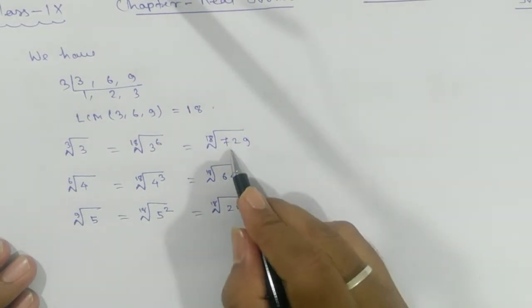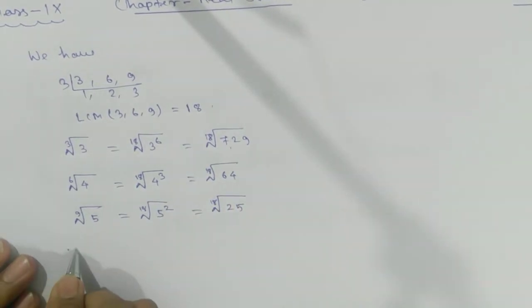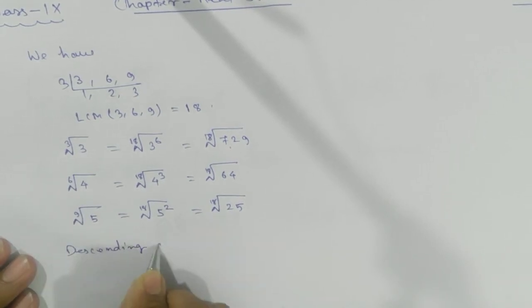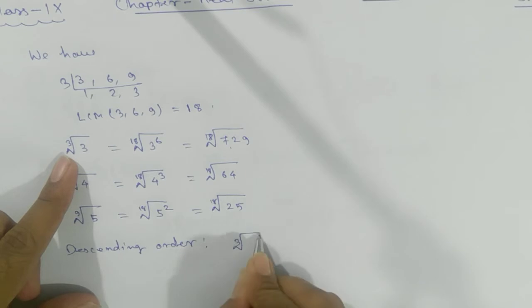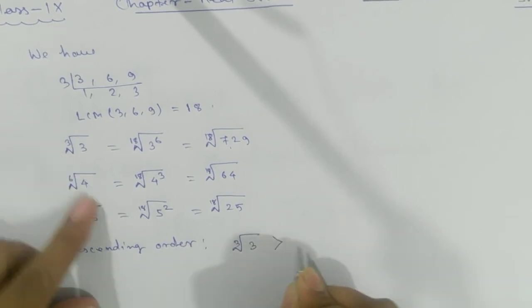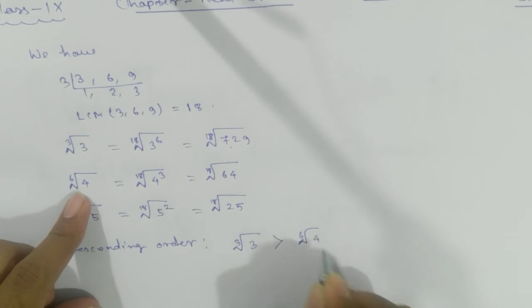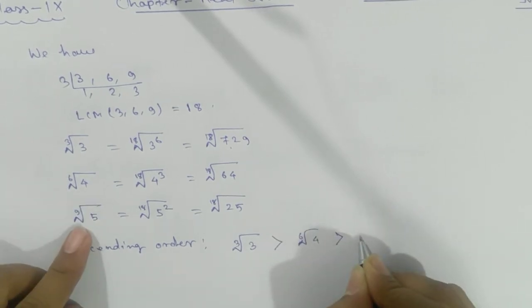Now see which one is bigger here. Descending order: this one is your bigger one. Cube root of 3, and then 64, 6th root of 4.